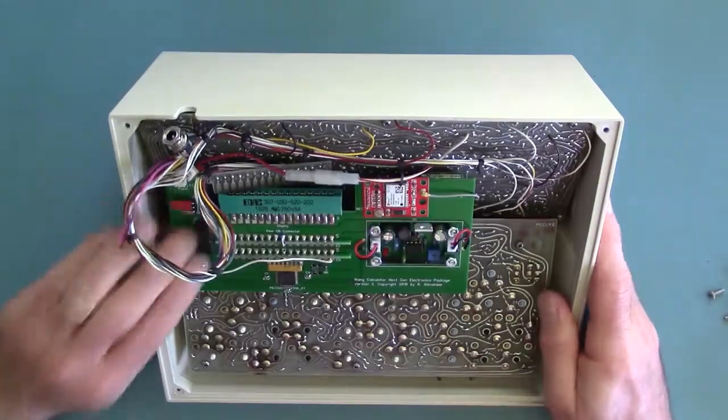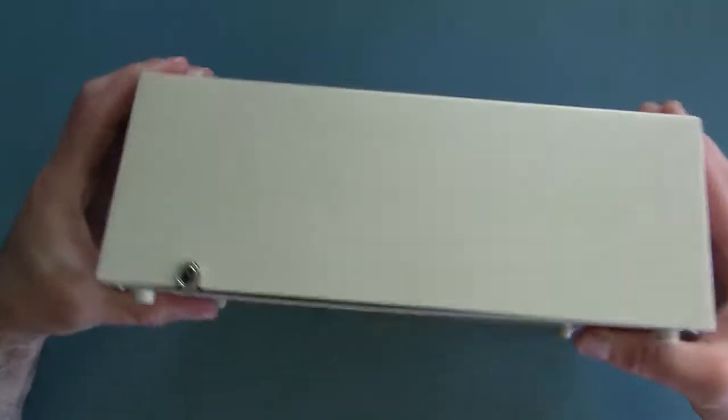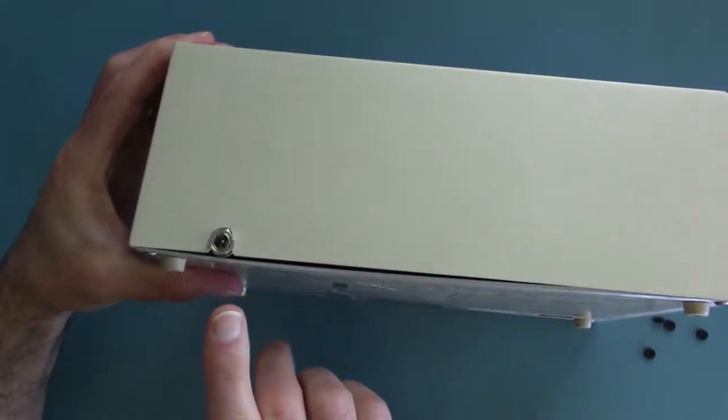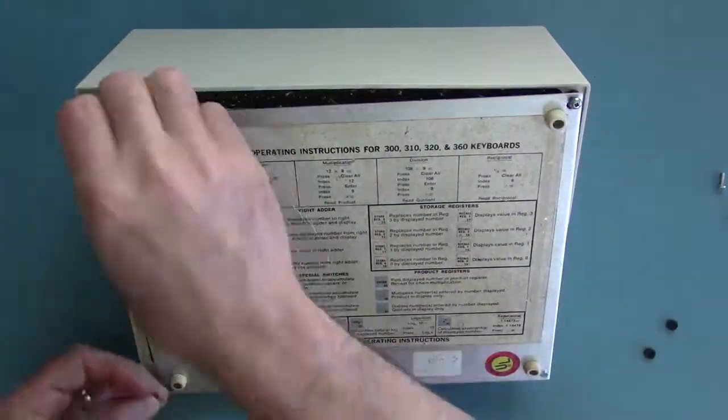When you look down in, you shouldn't be able to see any of the metal traces on the edge card. When you put the bottom plate back on, it will bulge a bit around the power connector. So you might want to add four small spacers between the plate and the enclosure.